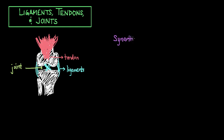The first type is called synarthroses, which are immovable joints where two bones are fused together. For example, you'll find these types of joints in the skull. When you were a baby, your skull was made up of a bunch of different pieces that grew as your brain grew. And then as an adult, the joints between these bones fused and became synarthroses.